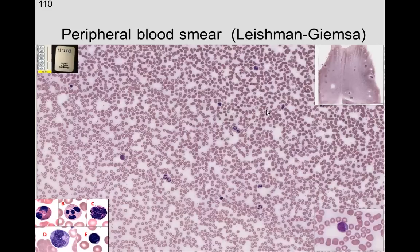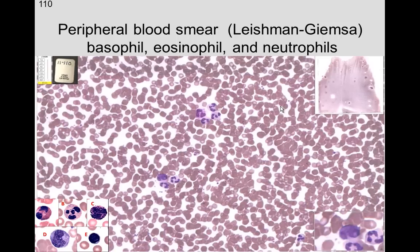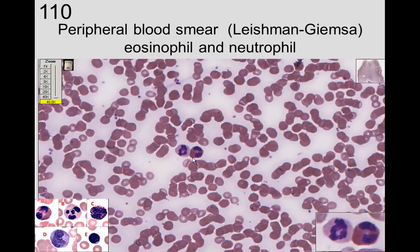Looking at slide 110, using the atlas as a reference, we have a monocyte, neutrophils, a lymphocyte, and possibly a large lymphocyte. In this slide we see three neutrophils, then another two neutrophils and a basophil.